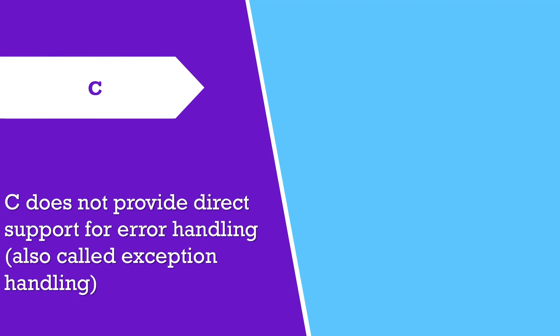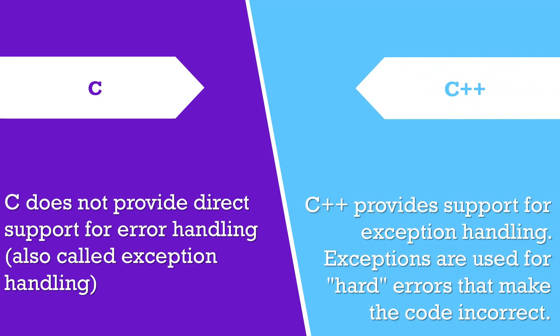C does not provide direct support for error handling, also called exception handling. C++ provides support for exception handling. Exceptions are used for hard errors that make the code incorrect.